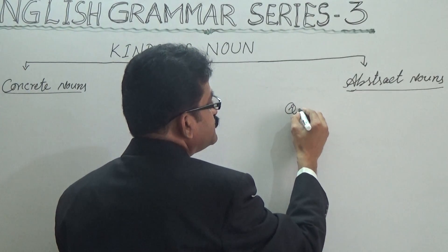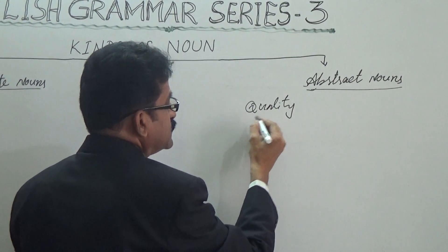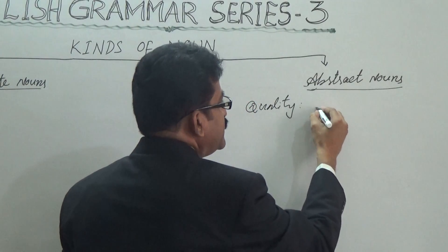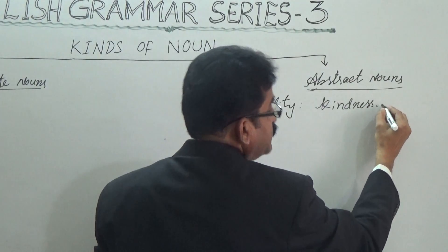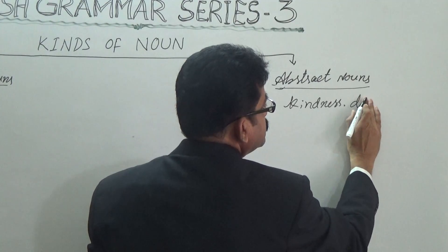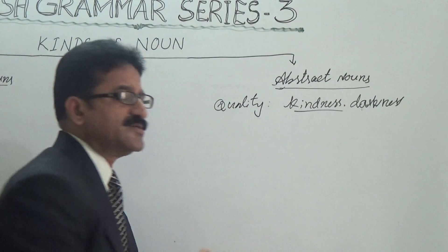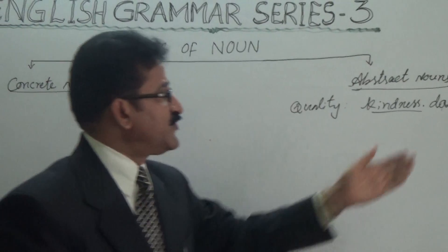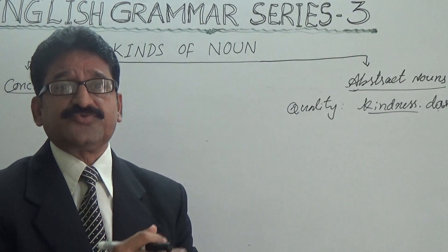The first category is quality. Quality in the sense — we can have, for example, kindness, sympathy, darkness. We can feel kindness; it is a characteristic which we cannot see. Darkness — we have to feel it. It is not physically existing, it cannot be touched.